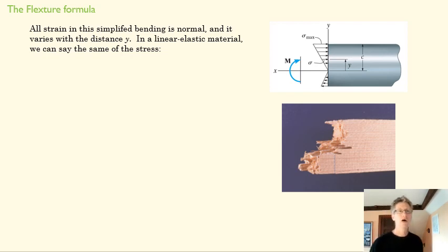So all strain in this simplified bending, what I mean by that is like in a very simple case, is normal strain. And you can imagine in a real case that might be true or might not be true. There might be a small twist in the member that causes some shear strains and so forth. But when we simplify it mathematically, we get all normal stresses.